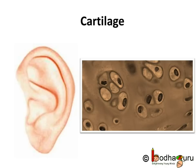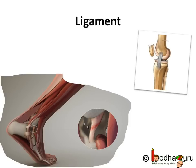Cartilage supports bones, and in the nose and ear it creates a supportive structure, making it a connective tissue. The two bones are connected to each other by an elastic tissue which also has considerable strength — this connective tissue is called the ligament. Ligaments contain very little matrix.